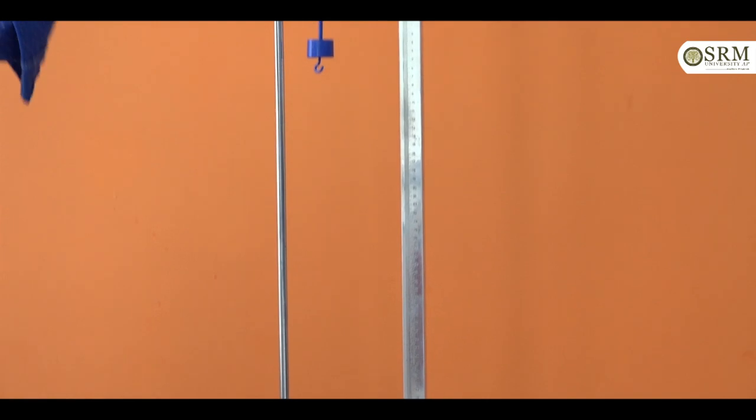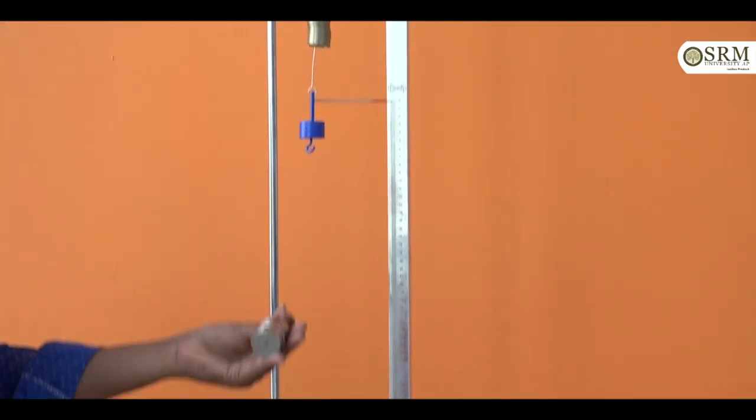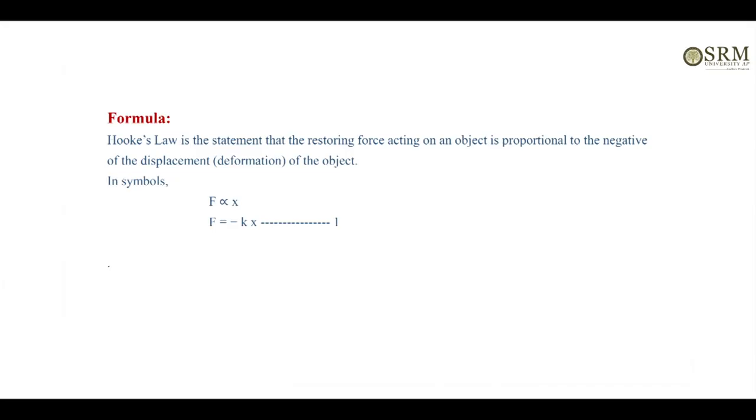Apparatus are spring constant apparatus and weight hanger. Here our formula is F equals minus kx.